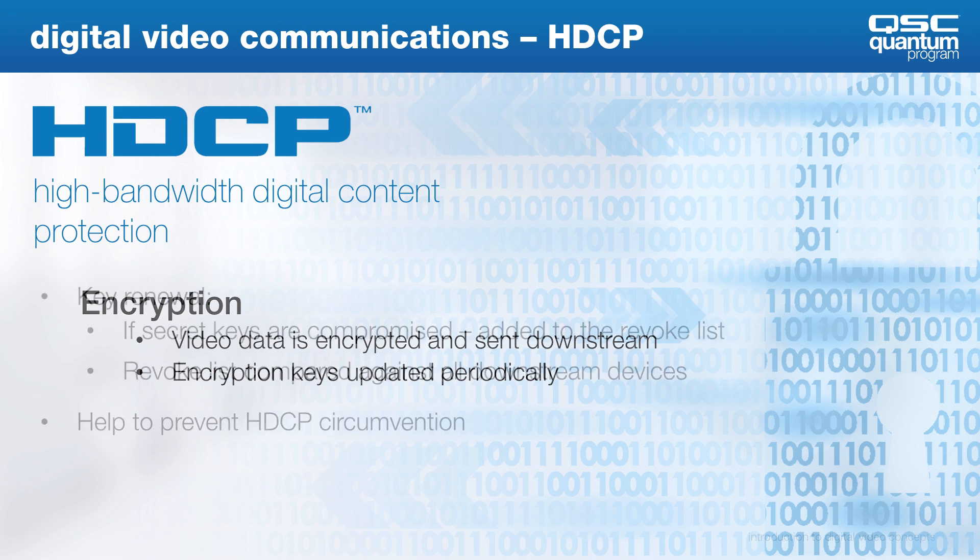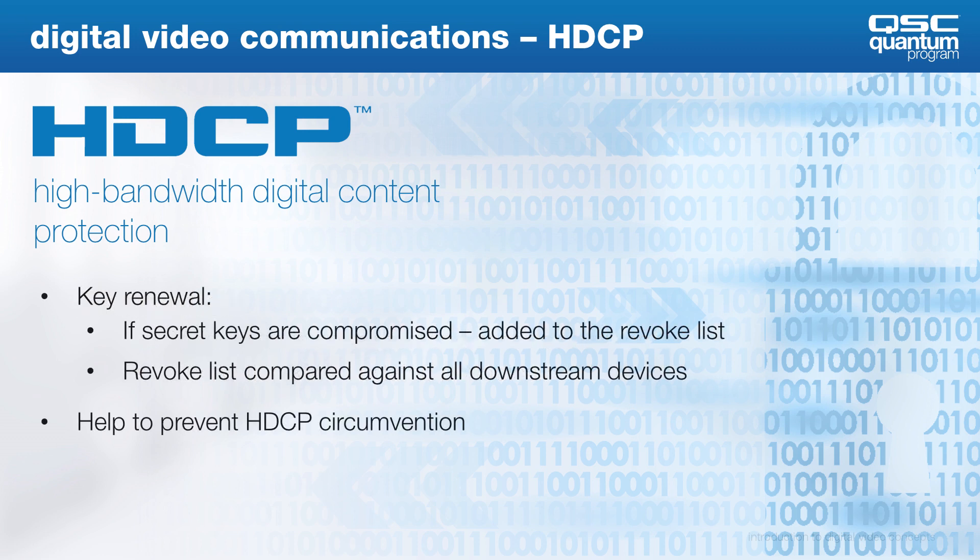Secret keys are used during the encryption process. So if those secret keys are compromised, the whole system can be circumvented. All compromised keys are revoked, and the revoked list is compared against any downstream devices to verify only legitimate public keys are used.